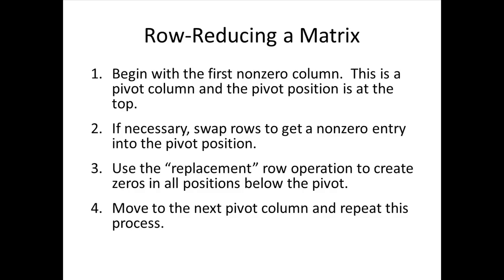Here's the process we're using to obtain echelon form. Begin with the first non-zero column — this is always a pivot column, and the pivot position is at the top. If necessary, swap rows to get a non-zero entry into that pivot position. Then use the replacement operation to create zeros in all positions below that pivot. Once that column is set, move on to the next pivot column and repeat the process, continuing until the matrix is in echelon form.